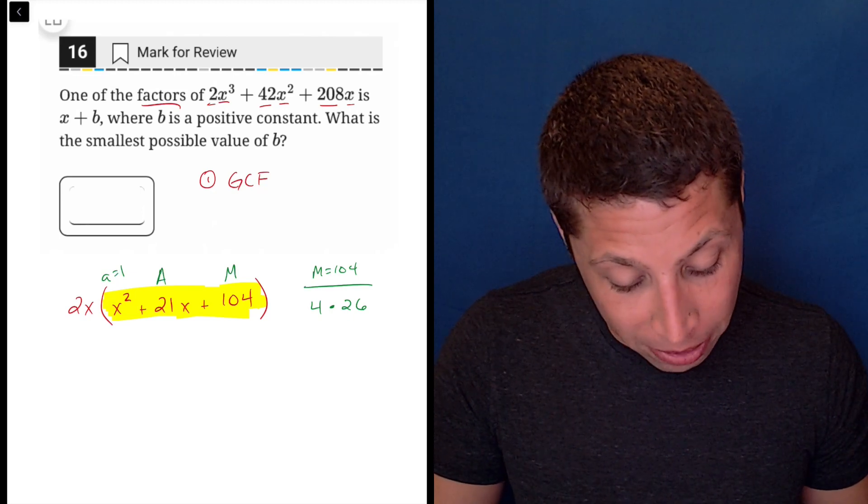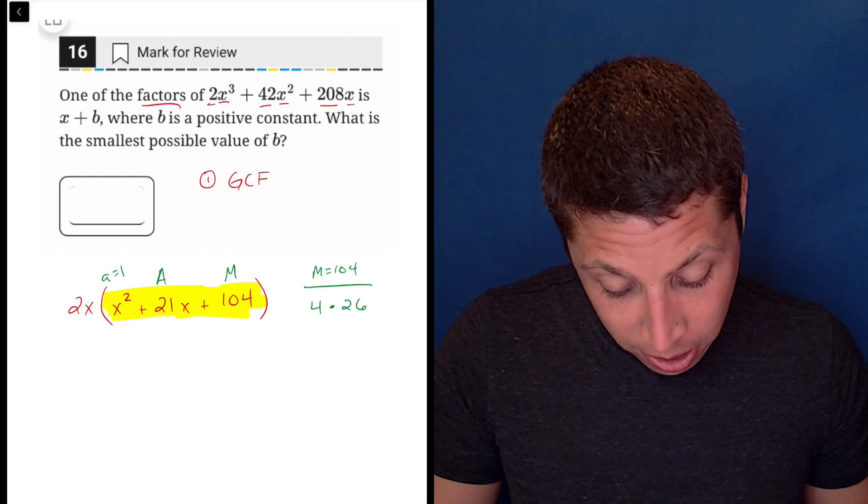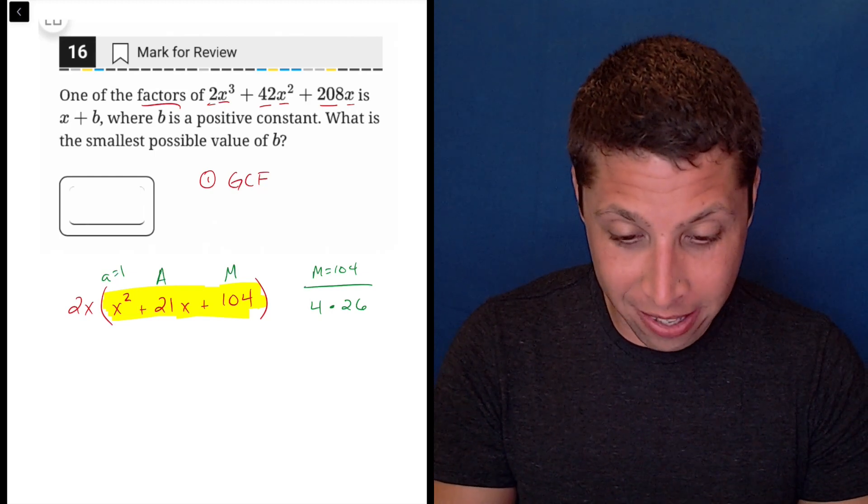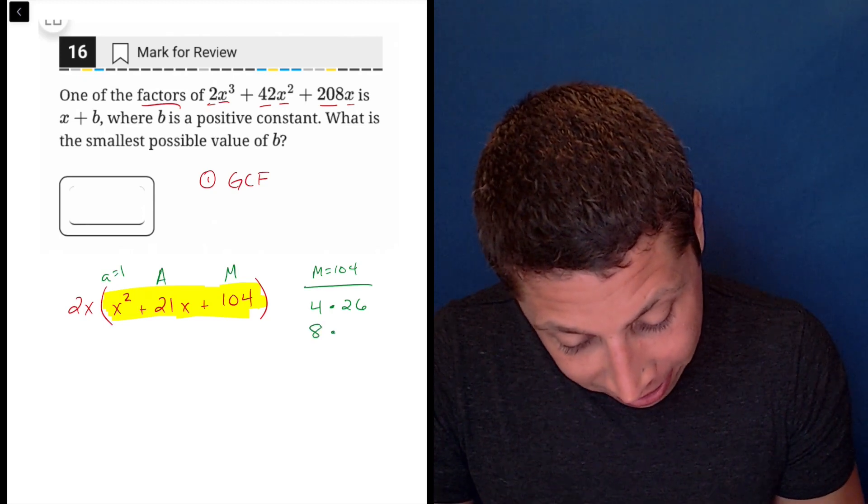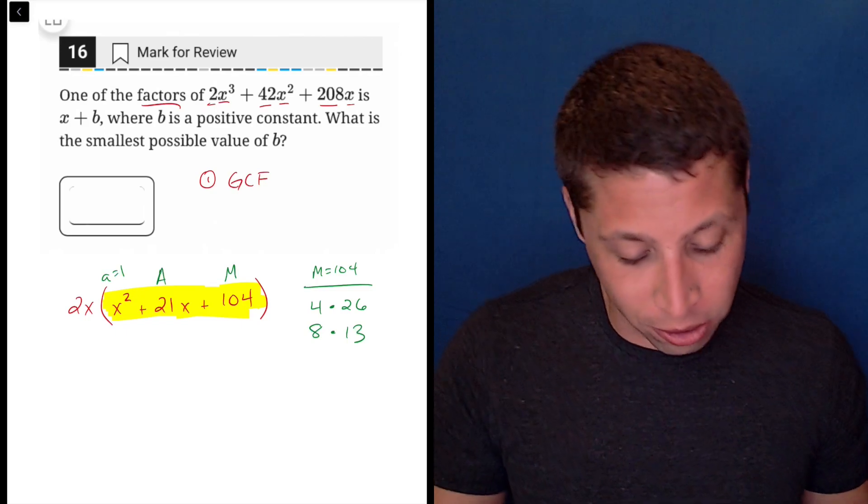So we need to bring them closer together. Let's try 8. 104 divided by 8 is 13. 8 times 13, and 8 plus 13 is 21. So this is going to work.